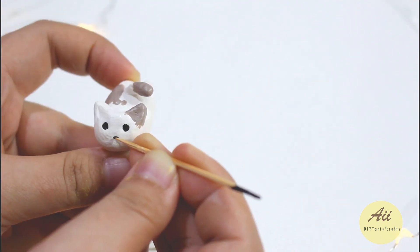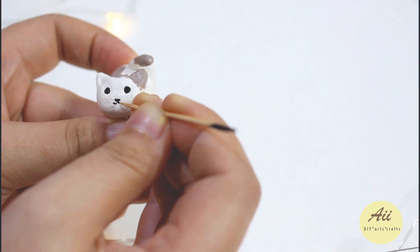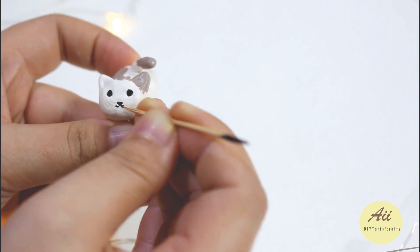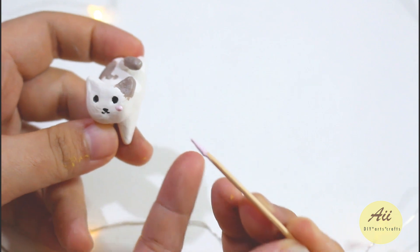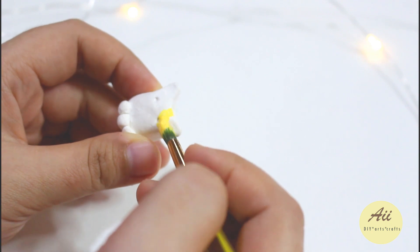We are now moving on to painting the cats. I am using acrylic paint to add details but you can definitely use watercolor if you don't have one. Just make sure you don't use a lot of water as it will reactivate the clay making it mushy and soft.